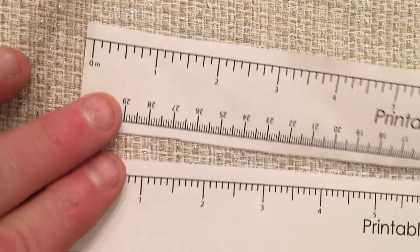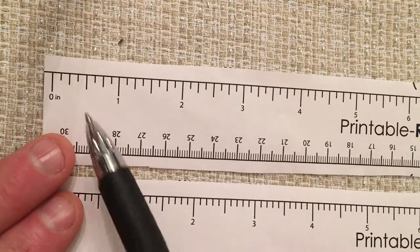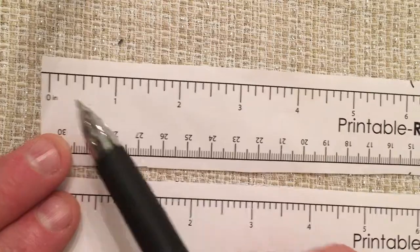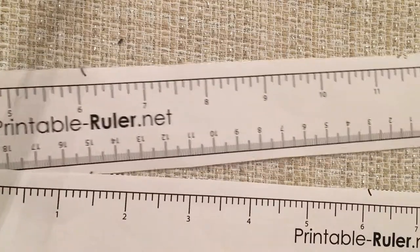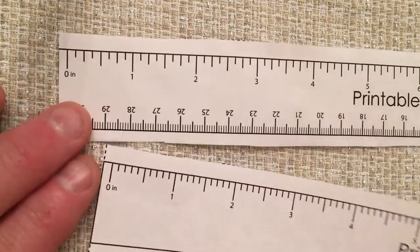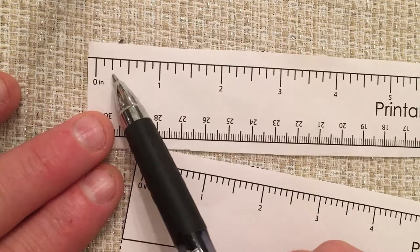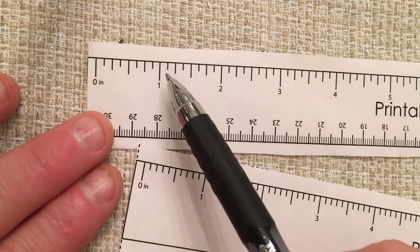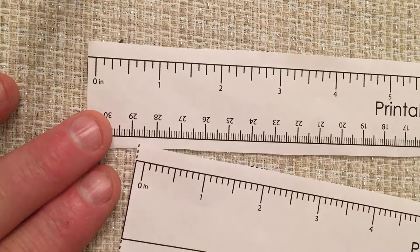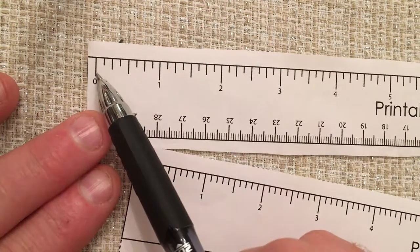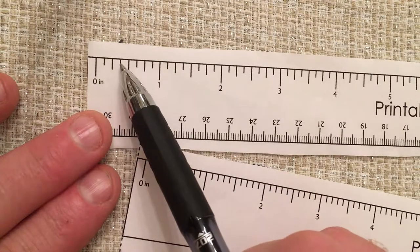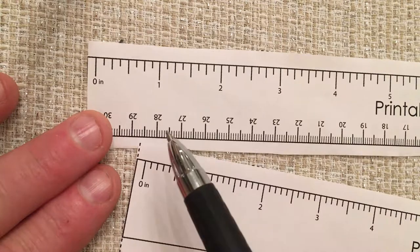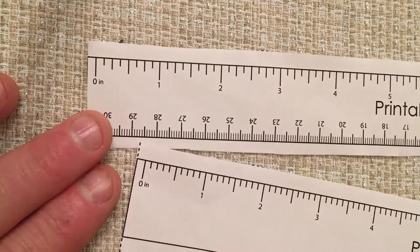The next ruler type is a fractional inch accurate to the one-eighth of an inch, and I can tell it's an inch because it goes from zero up to twelve. And there are one, two, three, four, five, six, seven, eight divisions between the zero and the one. So I can take one-eighth, two-eighths, three-eighths, four-eighths, five-eighths, six-eighths, seven-eighths, eight-eighths, which makes a whole number one.